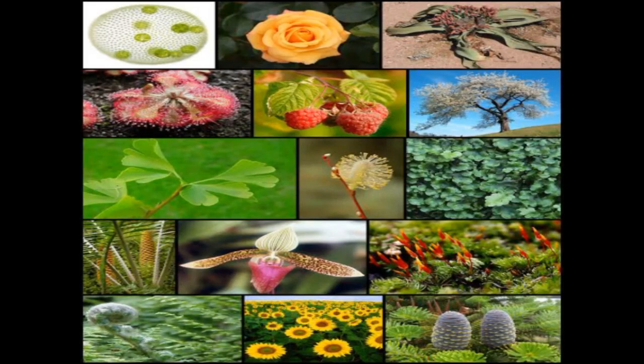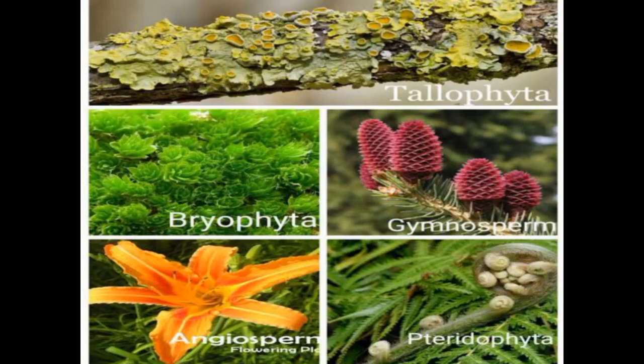Plantae kingdom includes mosses, ferns, conifers, flowering and non-flowering plants. Plantae kingdom are classified as Thallophyta, Bryophyta, Gymnosperm, Angiosperm and Pteridophyta.